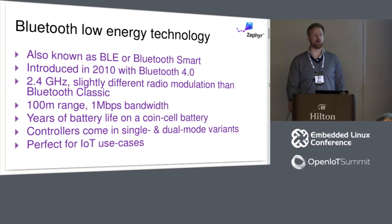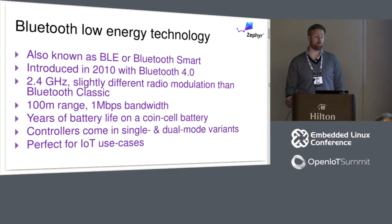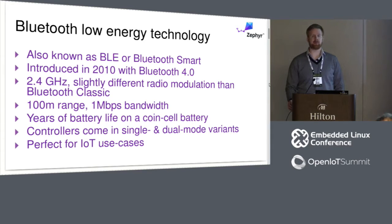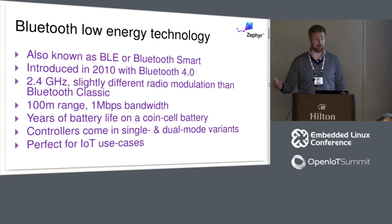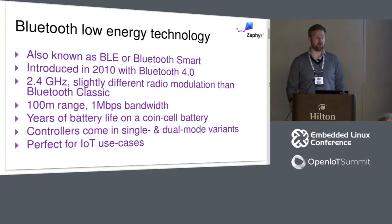It's the same 2.4 GHz frequency as classic Bluetooth, but it's a little bit different when it comes to the radio modulation. You got until Bluetooth 4.2 about the same range and one megabit per second bandwidth. Bluetooth 5, which came out just at the end of last year, improves on both of these aspects — up to 2 megabits per second and about four times the range, though you have to compromise throughput for range. Unlike Bluetooth Classic, you get drastically smaller power consumption with Low Energy. You can run for years with a small coin cell battery.